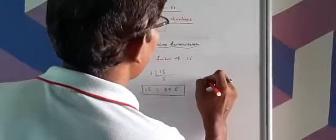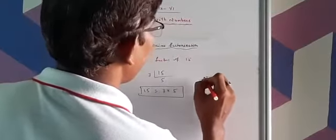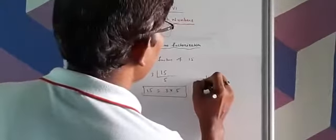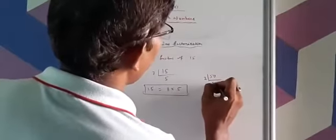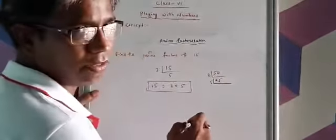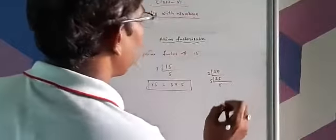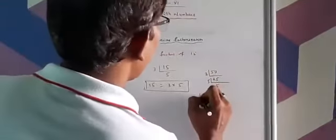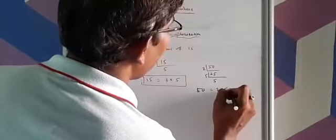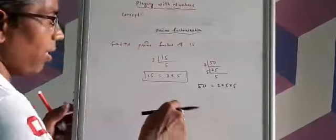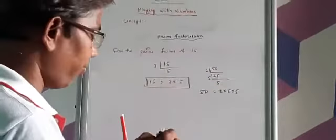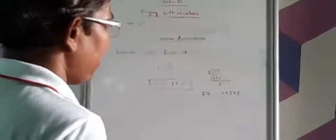Taking another example, suppose 50. First, we put the prime number 2: 50 ÷ 2 = 25. Then, 25 ÷ 5 = 5. So, 50 can be written as 2 × 5 × 5. That is the prime factorization of 50. Thank you. Have a nice day.